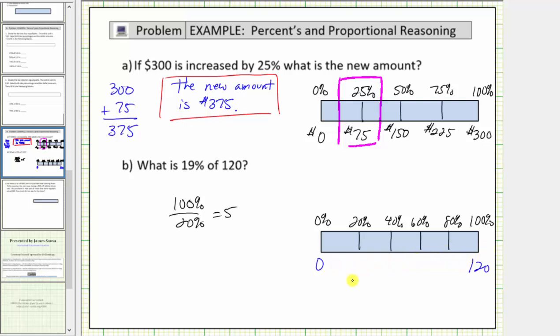And now to determine how to count along the bottom, we'll divide 120 by five. 120 divided by five is equal to 24, so we'll count by 24s along the bottom. So we have zero, 24, 48, 72, 96, and 120.